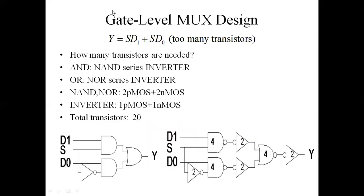Now we'll see the gate-level implementation of the MUX using CMOS. For the boolean expression S·D1 + S̄·D0, we implement S·D1 using a first AND gate with inputs S and D1, and S̄·D0 using a second AND gate with S inverted to get S̄. Both terms are OR'd together using an OR gate to get S·D1 + S̄·D0. In CMOS, AND is implemented as NAND followed by an inverter, and OR as NOR followed by an inverter.